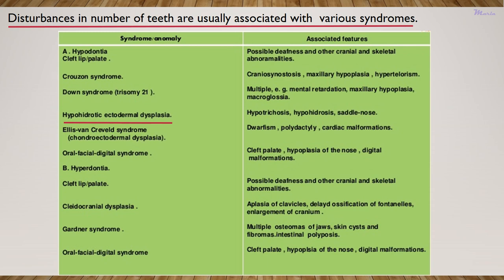Hyperdontia, on the other hand, is also associated with cleft lip and cleft palate, cleidocranial dysplasia, Gardner syndrome, and Oral Facial Digital Syndrome. Among these, cleidocranial dysplasia is an important syndrome associated with an increased number of teeth. The related features of these syndromes should be memorized by the students.